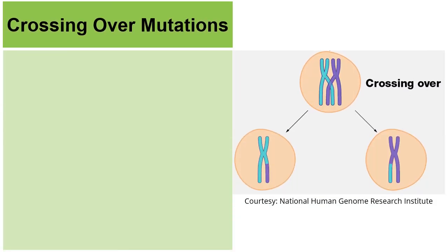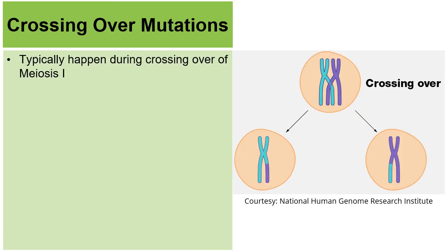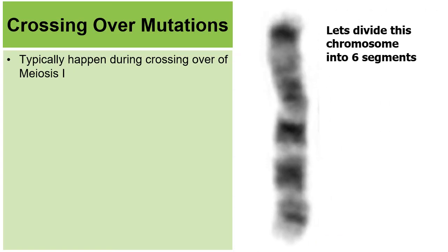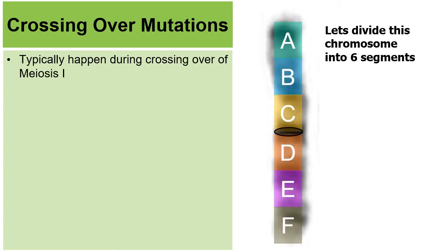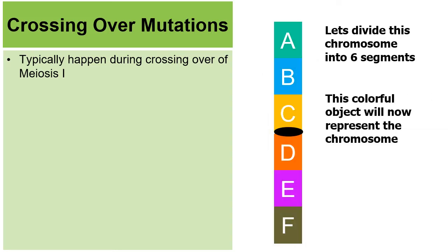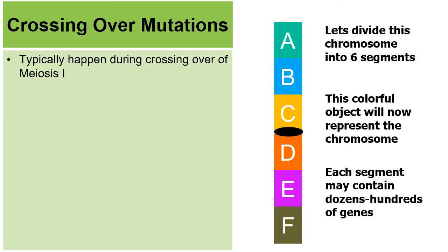Let's look at a couple other mutations that can happen with chromosomes. Crossing over, which occurs during prophase 1 of meiosis 1, is a normal event where homologous chromosomes intertwine and exchange segments of DNA. It's a very important step because it helps create the genetic diversity we see within our species. However, errors can often happen during this process. Here's a chromosome divided into six segments — A, B, C, D, E, and F — where each segment may contain dozens or hundreds of genes.